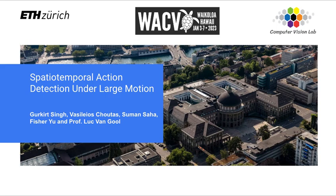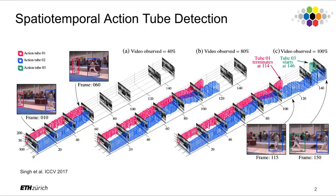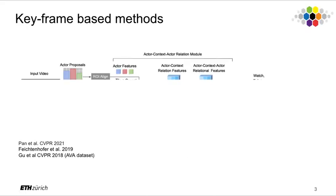My name is Gurkheed Singh. I'm going to present our joint work with my colleague from CVL at ETH Zurich titled 'Spatial Temporal Action Detection Under Large Motion.' Spatial temporal action detection can be defined as a problem of finding spatial and temporal bounds of action instances, where spatial bounds are defined by bounding boxes and temporal bounds are defined by linking these frame-level boxes from the point where an action starts to a point where it ends.